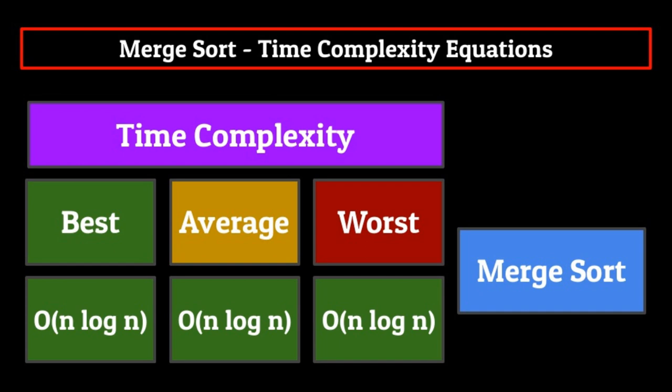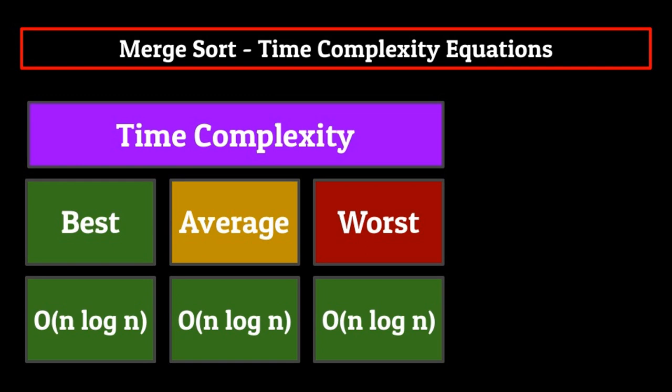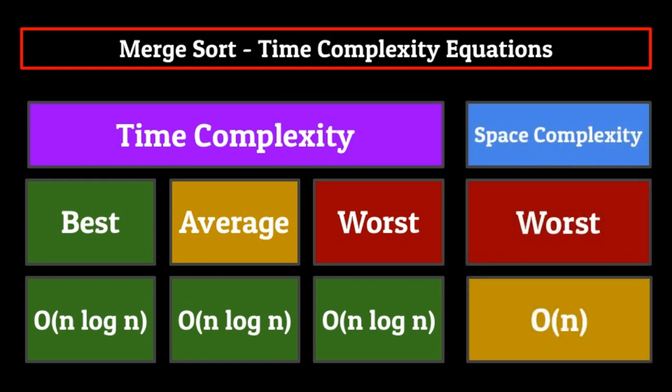Merge sort also has a space complexity of O(n). This has to do with the temporary arrays that we create during the merging process. Luckily, these temporary arrays get deleted in memory after we use them, so we will only ever have a maximum space complexity of O(n), representing the temporary arrays created for the last merge. This is not ideal for programs which need to work on limited space, and so you as the programmer will have to weigh the options and decide if the increased speed and efficiency outweighs the auxiliary space required. There are ways to make merge sort have O(1) space complexity through variations in the code, but since we're just covering basic merge sort today, that's what we're sticking with.